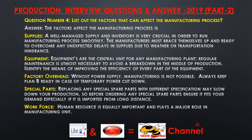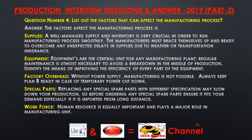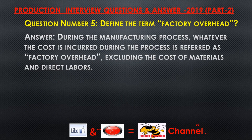Identify means of improving efficiency of every part of equipment. Factory overhead — without power supply, manufacturing is not possible; always keep a Plan B ready in case of temporary power cuts. Special parts — replacing spare parts with different specifications may slow down production, so before ordering special spare parts ensure they fit your requirements, especially if imported from a long distance. Workforce — human resources play a major role in manufacturing units.